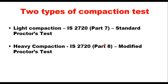There are two types of compaction test. One is the light compaction test, also called the standard proctor test, given in IS 2720 Part 7, and the other is the modified proctor test or heavy compaction test, given in Part 8. Light compaction is generally adopted for low volume roads and heavy compaction for national highways, state highways, MDR, and expressways.